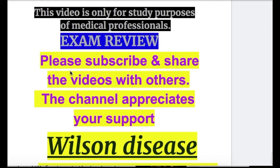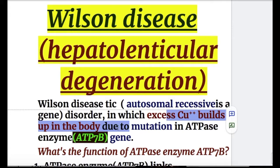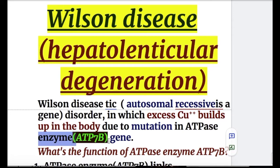In this video, we'll do an exam review on Wilson disease, also known as hepatolenticular degeneration. Wilson disease is a genetic autosomal recessive disorder in which excess copper builds up in tissues due to a mutation in the ATPase enzyme, the ATP7B gene.